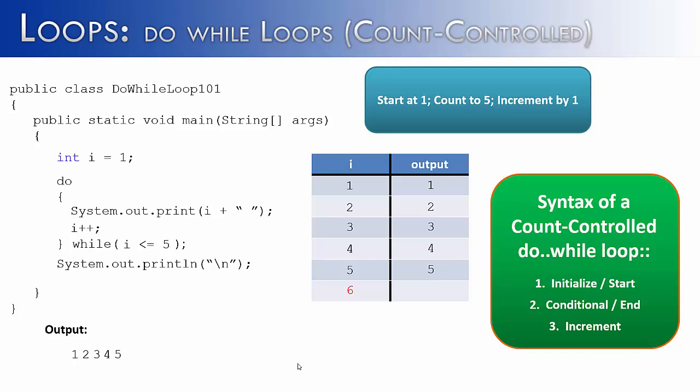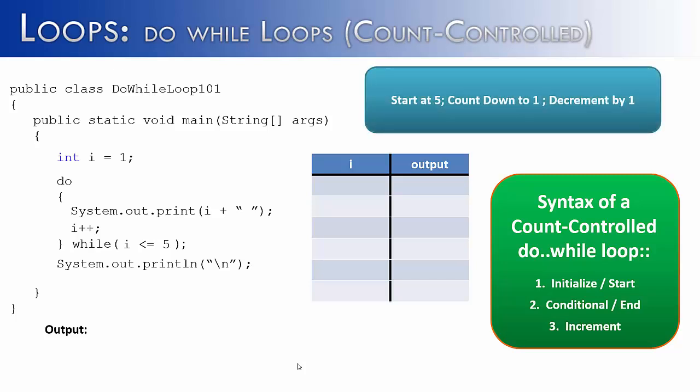Now, what if we wanted to change up what the loop was doing? That loop was starting at 1, counting to 5, and incrementing by 1. What if we wanted to start at 5, count down to 1, and decrement by 1? So instead of int i equals 1, we say int i equals 5. Instead of i less than or equal to 5, we say i greater than or equal to 1. And instead of i++, we say i--, which counts down by 1.